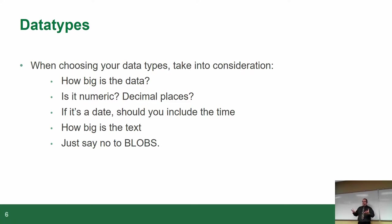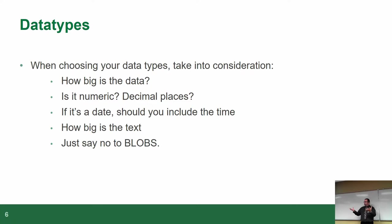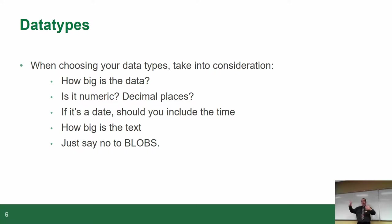The next one is text. In a database server there are several text data types: the character type, the variable character type, and then there's the one called text, also known as memo. In Oracle it's called a CLOB — character large object. That is just huge amounts of text. Depending on how much text you need, you've got to pick the appropriate type. One of the next slides shows the different data types specific to Postgres, which will give you an idea of what you actually work with.